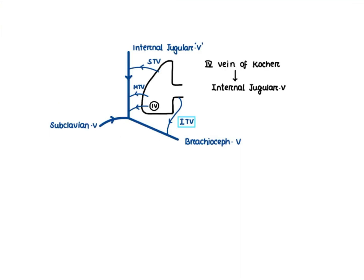I'll show you the illustration of the venous drainage here. This is your thyroid gland, and normally it has three veins. In some cases there is a fourth vein, known as the fourth vein of Cochin, which is occasionally found — not always — but generally three veins of venous drainage are seen.